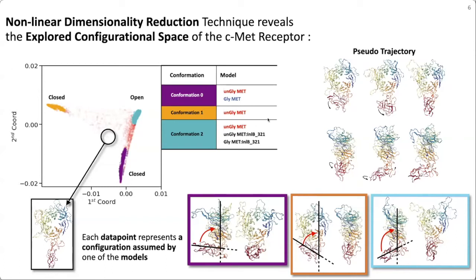From this analysis, I have two comments. First, regarding the glycans' role: the naked receptor in isolation explored all conformations, while the glycosylated receptor in isolation only explored the purple conformation, meaning the glycans are strongly reducing the configurational space explored by the isolated receptor — and as we'll see, this is definitely non-trivial.